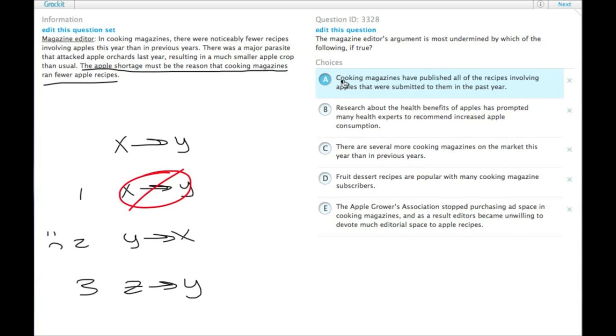Choice A, cooking magazines have published all of the recipes involving apples that were submitted to them in the past year. Well, that doesn't weaken the argument that it was an apple shortage, because it gives us a slightly lower supply, I guess, but it's still not a direct contradiction. We need an actual other cause for why they ran fewer recipes.